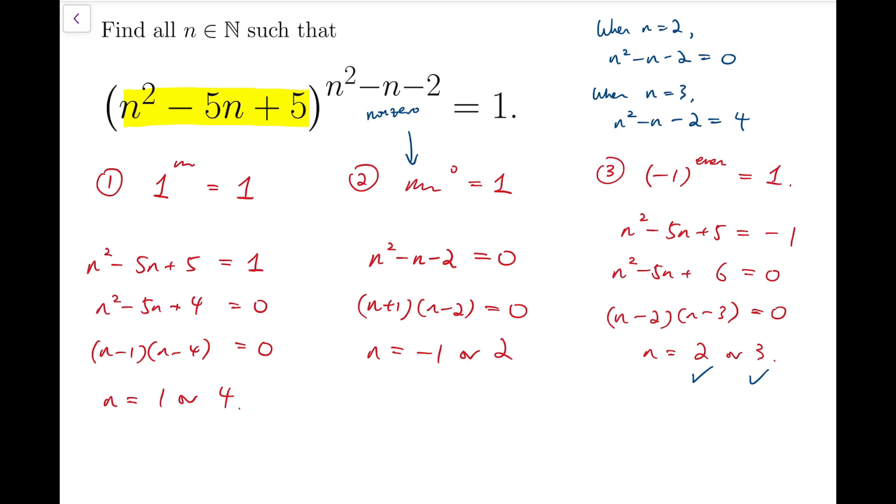And altogether, we'll actually have 5 solutions. Notice that these two actually repeated itself. So therefore, n can be minus 1, 1, 2, 3, and 4. And that's our final answer.